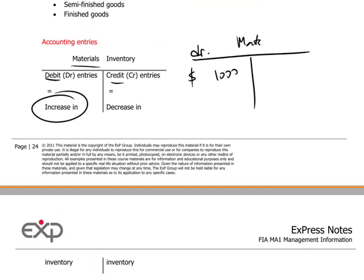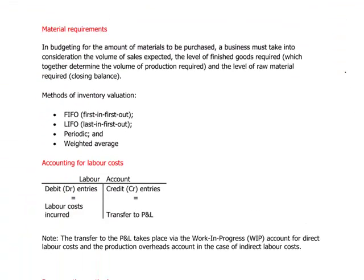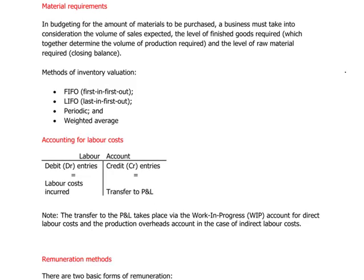If we remove materials, we reduce the balance by applying credits to the T-account. A $500 credit would reduce the balance from $1,000 down to $500. Practice makes perfect with debits and credits.